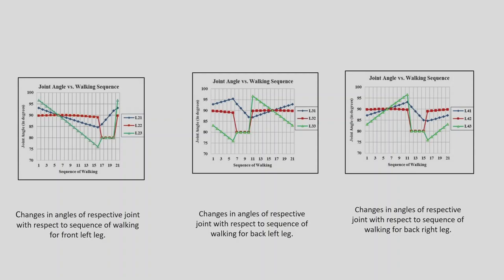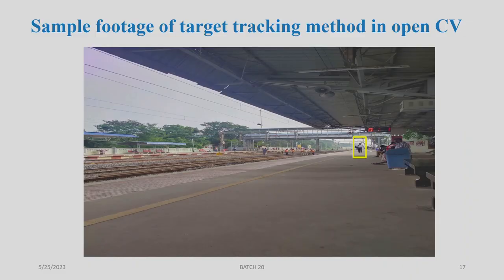You can see the sample footage of the target tracking method in OpenCV. We can see the yellow rectangle box — this is how the object is tracked in OpenCV. We can fix on the object and follow it by tracking it.